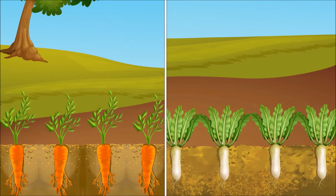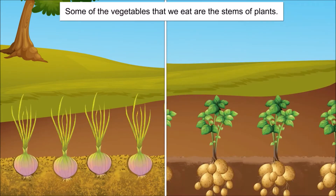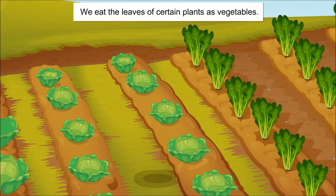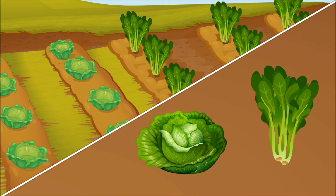Some of the vegetables that we eat are the roots of plants, for example carrot and radish. Some of the vegetables that we eat are the stems of the plants, for example onion and potato.